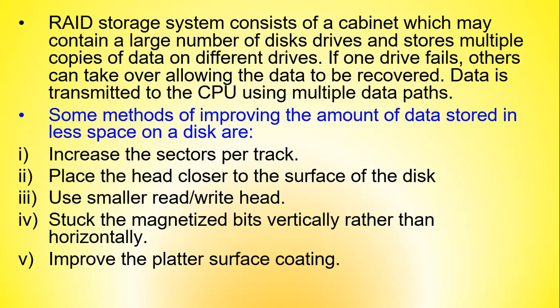Data is transmitted to the CPU using multiple data paths. Some methods to improve the amount of data that can be stored in less space on a disk include: increasing the sectors per track; placing the head closer to the surface of the disk; using a smaller read-write head; stacking magnetized bits vertically rather than horizontally; and improving the platter surface coating.